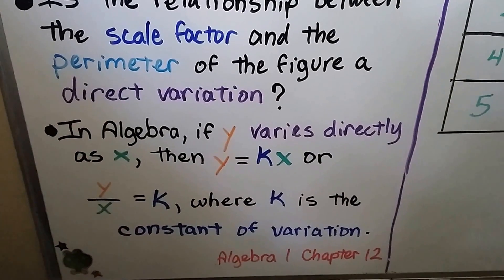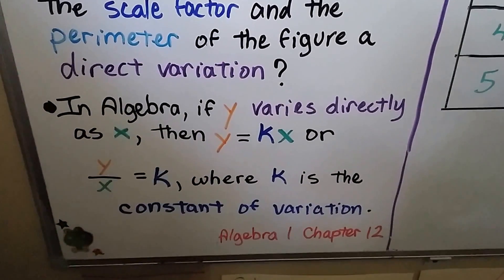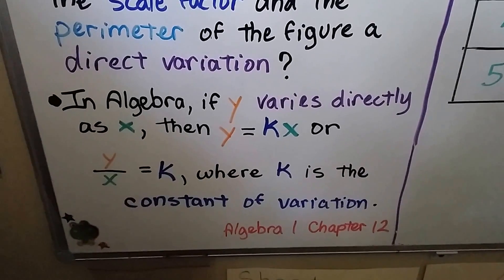Well, in algebra, if y varies directly as x, then y equals kx, or y divided by x is equal to k, where k is the constant of variation.